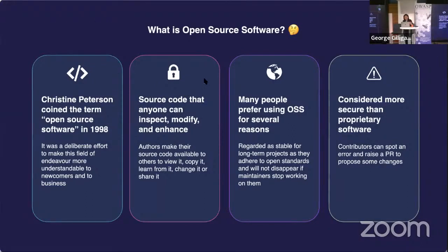Open source software is a term coined by Christine Pearson in 1998 — a deliberate effort to make this field more understandable to newcomers and businesses. That was also the first year O'Reilly organized the open source summit. The definition centers on authors making their source code available to everyone: to view, copy, learn from, change, and share. Many people prefer OSS because it's regarded as more stable for long-term projects and more secure than proprietary software, since many contributors can review and propose changes.